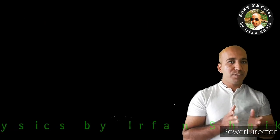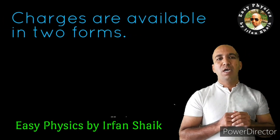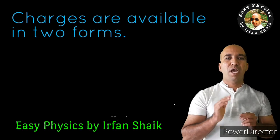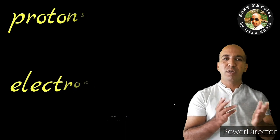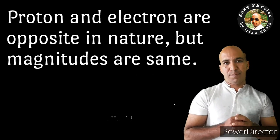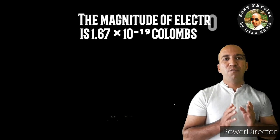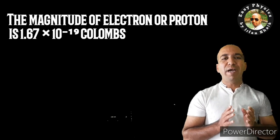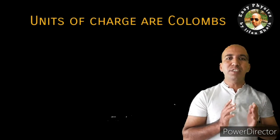Before going to know about electricity, we must have an idea of charges. Basically, charges are available in two different forms: positive charge or negative charge. The positively charged particles are called protons and the negatively charged particles are called electrons. These two charges are opposite in nature, but their magnitude is the same — 1.6 multiplied by 10 to the power of minus 19 coulombs. Coulombs is the unit for charge, meaning charge is measured in coulombs.